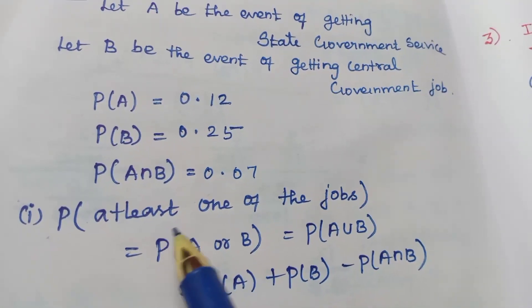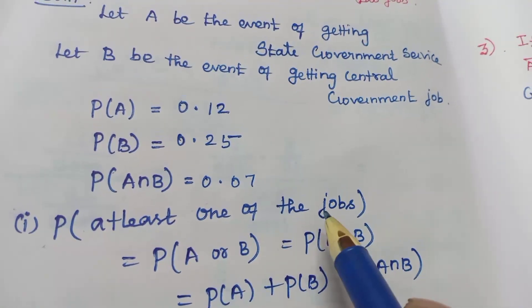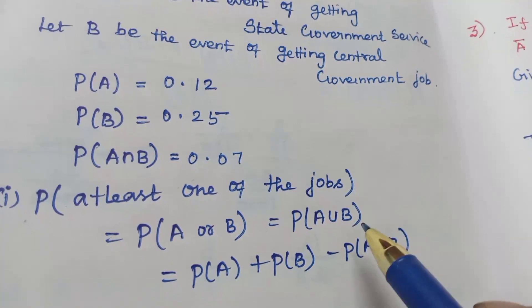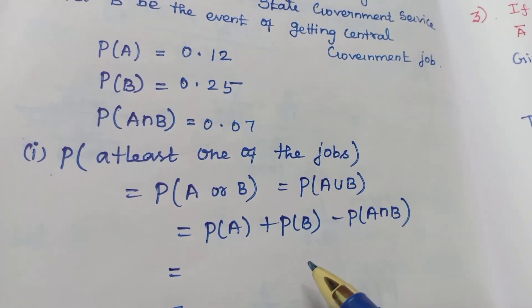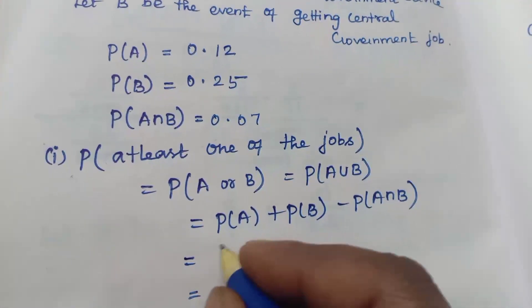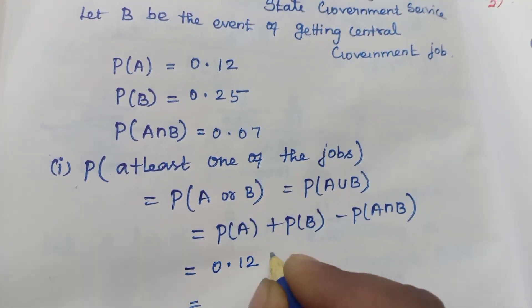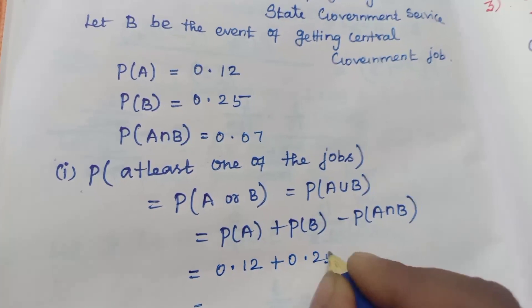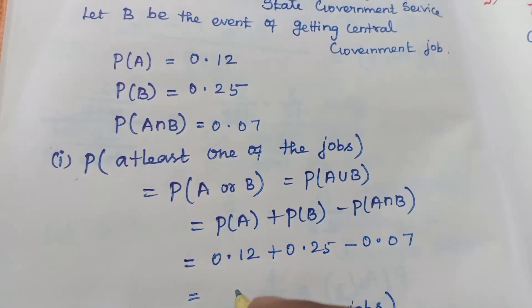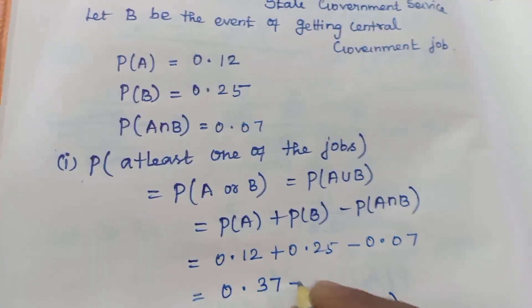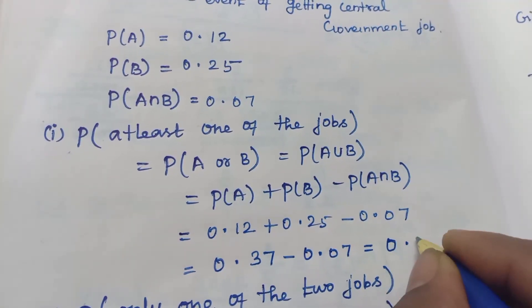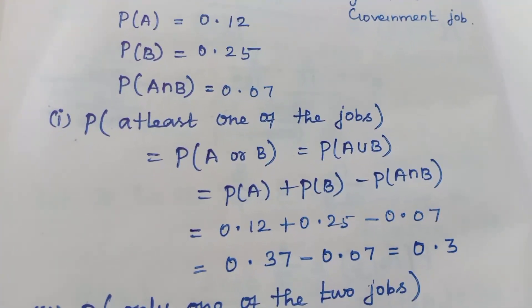First part: probability of getting at least one of the jobs — that is A or B — therefore probability of A union B. We apply the addition theorem on probability: probability of A plus probability of B minus probability of A intersection B. Substituting: 0.12 plus 0.25 minus 0.07 gives 0.37 minus 0.07, so the answer is 0.30. The probability of getting at least one of the jobs is 0.3.